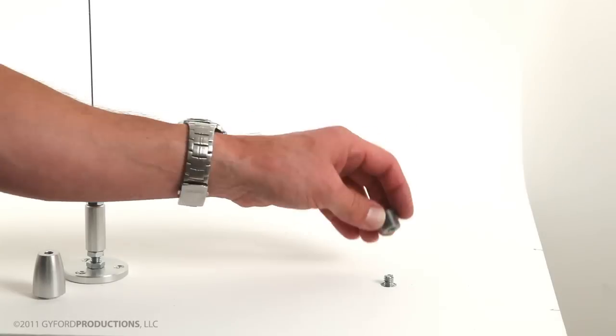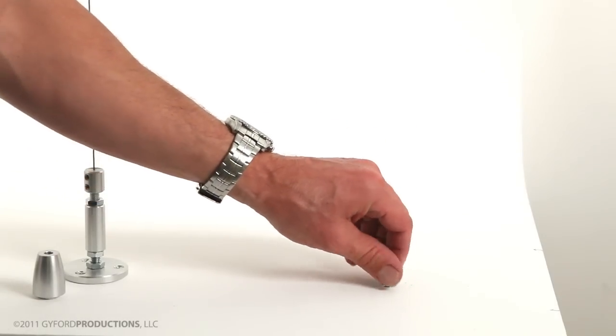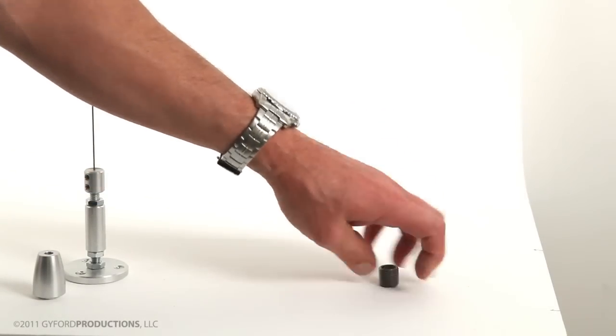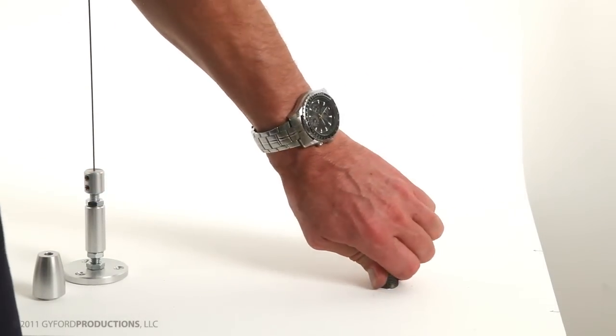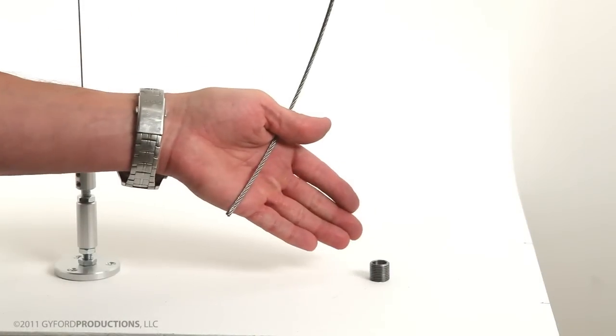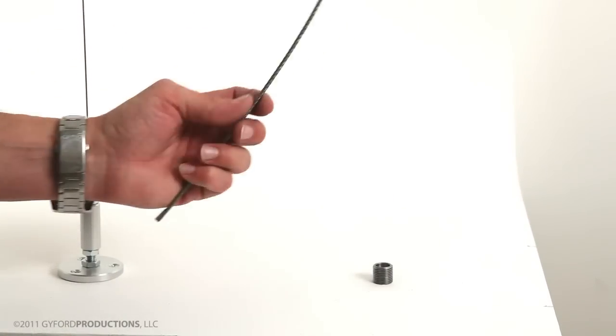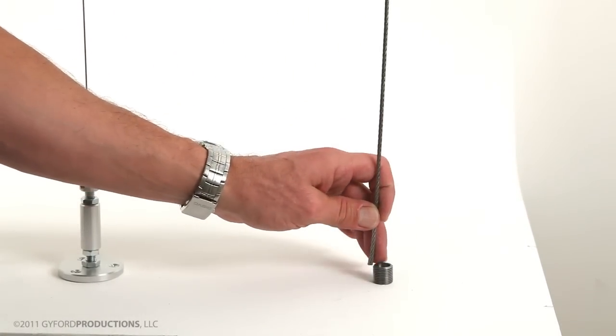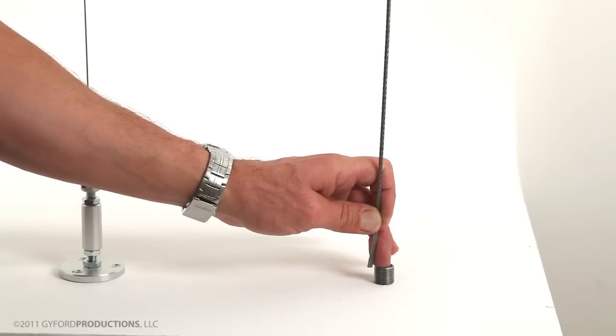Now we'll take the turnbuckle mount and screw it down onto that threaded portion that's sticking out. Just snug it down. Once we have the turnbuckle mount in place, we're going to bring our wire down, and we're going to cut the wire off just at or above the top of the mount.